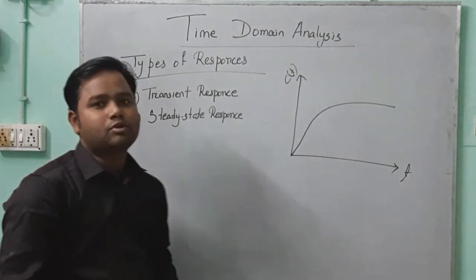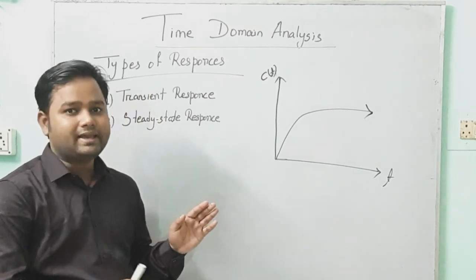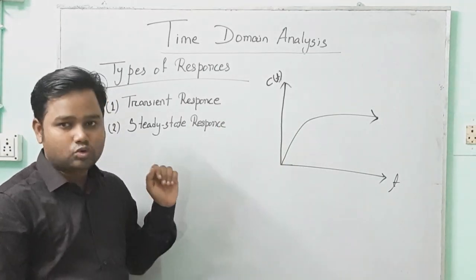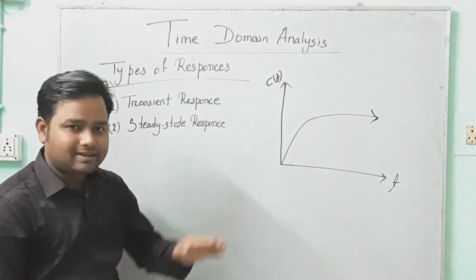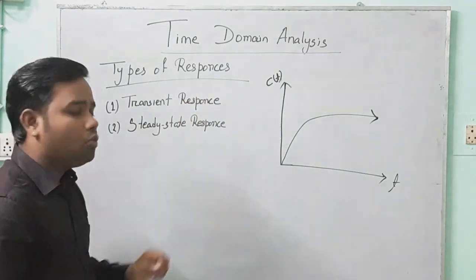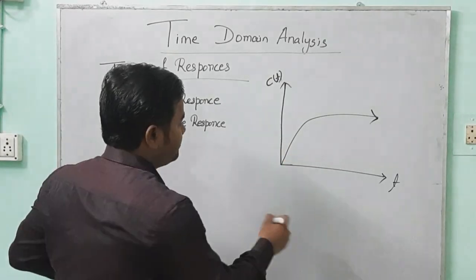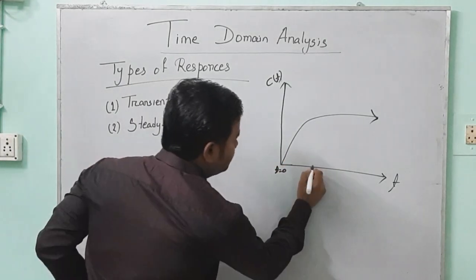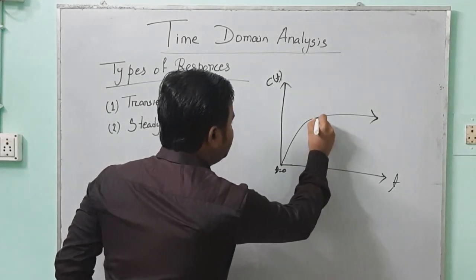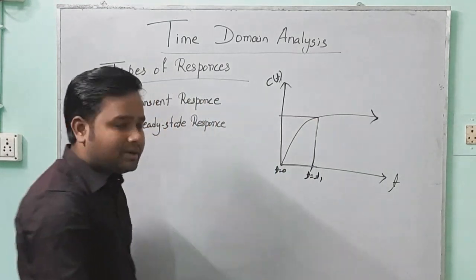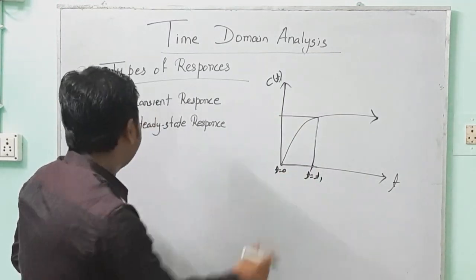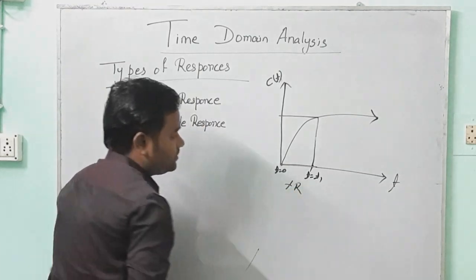First we will go for transient response. Transient response means with a small change in time, the output changes in a large manner. From time T equal to 0 to T equal to T1, the time change is small but the output changes from a very small value to a very large value. That means from T equal to 0 to T equal to T1, it is the transient response.